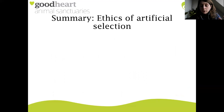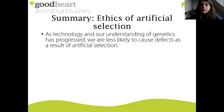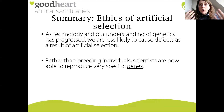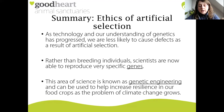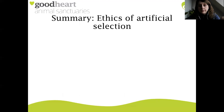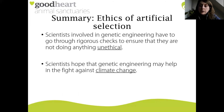Let's just wrap this all up. As technology and our understanding of genetics has progressed, we are less likely to cause defects as a result of artificial selection. Rather than breeding individuals as a whole, scientists are now able to reproduce very specific genes - they can actually cut out very specific bits of DNA and insert that into another organism without reproducing two entire organisms together. This area of science is known as genetic engineering, and can be used to help increase resilience in our food crops as climate change continues to grow. Scientists involved in genetic engineering go through rigorous checks to ensure they are not doing anything unethical, and scientists hope genetic engineering may help in the fight against climate change.